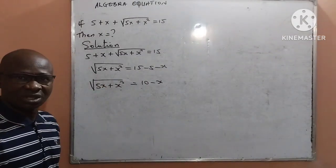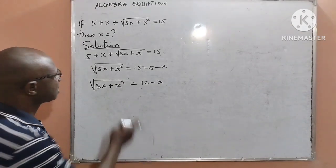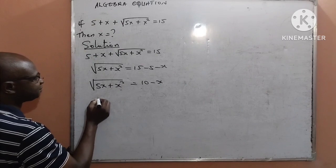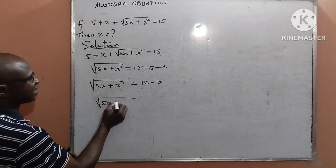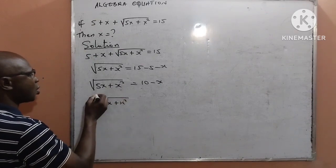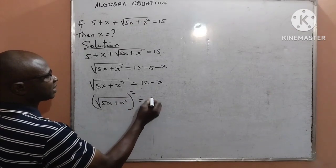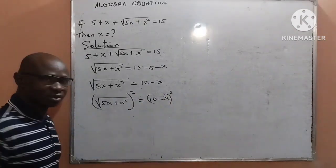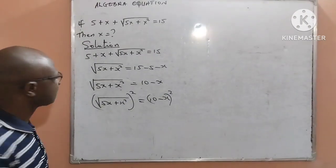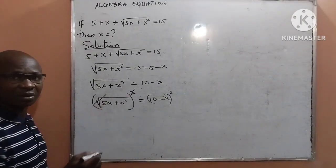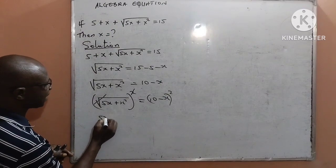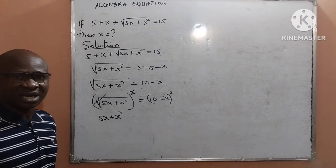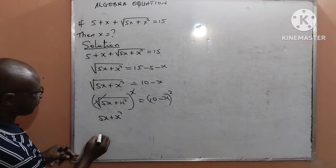Next, I want to remove this square root and to do that I will find the square of both sides. That means the square root of 5x plus x squared all squared will equal 10 minus x also squared. In mathematics, this square will cancel the square root to give me 5x plus x squared. From the right hand side, let us look at this.